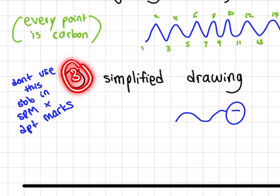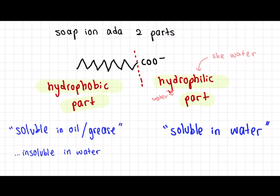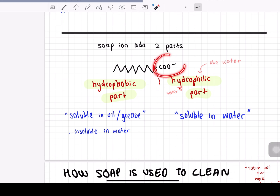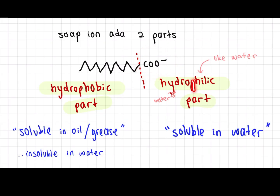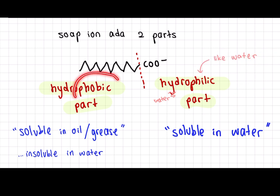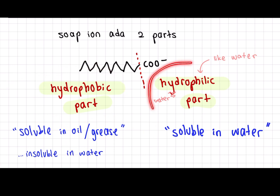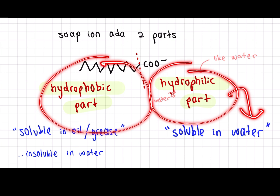Number three is a simplified drawing — but please don't use this in SPM. What you need to know is that the soap ion has two parts: one is the hydrophilic part and one is the hydrophobic part. The hydrophilic part likes water, meaning it is soluble in water. The hydrophobic part — phobic like phobia, you don't like it — is not soluble in water but is soluble in grease.